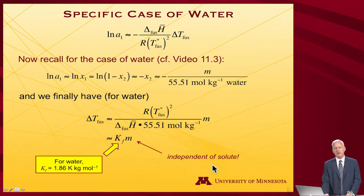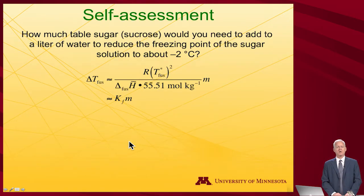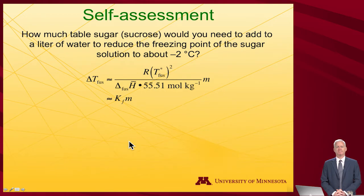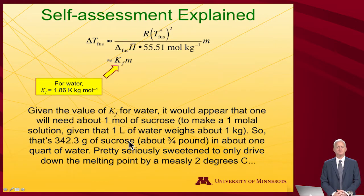I'll emphasize once more: this is independent of the solute. It doesn't matter what substance you dissolve to make that molal solution — it's just that you've added something and driven down the solvent activity. Here's a good chance to try a specific example. We worked with sucrose a couple of videos ago: how much sucrose, table sugar, would you need to add to a liter of water to reduce the freezing point of that sugar solution to about −2°C? The answer is that you'll need to make an awfully concentrated simple syrup to actually achieve that level of freezing point depression — you don't get all that much range in the case of water.